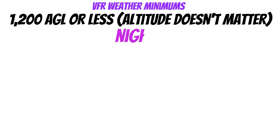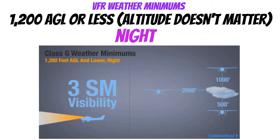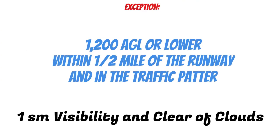At night, the FAA wants you to have a little bit more separation. For that, we'll break out our trusty three Cessna 152s — we need three statute miles visibility, 500 feet below the clouds, 2,000 from the sides, and 1,000 from the tops. Now, there is one exception to these nighttime minimums: if you're at 1,200 feet AGL or lower, within a half mile of the runway, and in the traffic pattern, you can go back to using your daytime VFR minimums.